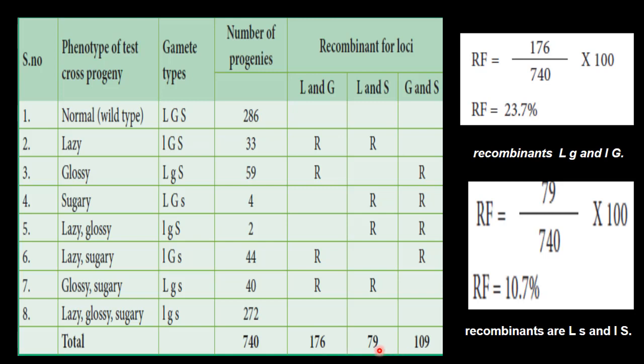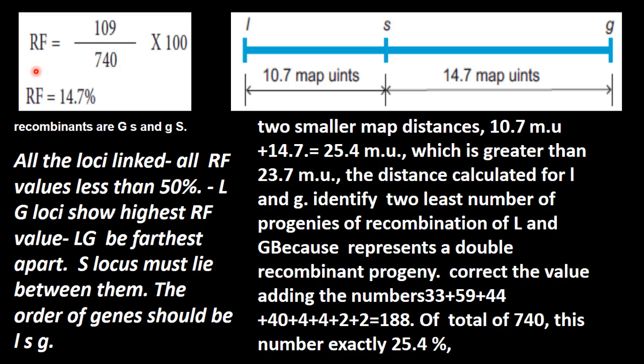Then G and S and L and S. If L and G far away, so this G is far away. Now nested recombinant frequency, 109 offspring out of 740 is 14.7. This is also less than 50, it is also linked. This recombination is between capital G and small S and small G and capital S. So this is for G and S.